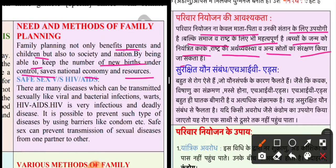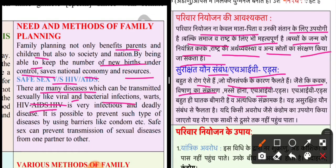Safe sex and HIV/AIDS — surakshit youn sambandh aur HIV AIDS. There are many diseases which can be transmitted sexually, like viral and bacterial infections, warts, and HIV/AIDS. Bahut se aise rog hai jo ki youn sambandh ke karan failte hai, jaise ki kavak, vishanu ka sankraman, masse hona, HIV AIDS. HIV is a very infectious and deadly disease. It is possible to prevent such diseases by using barriers like condom. Safe sex can prevent transmission of sexual diseases from one partner to another. HIV AIDS bahut ghatak bimari hai aur ye atyadhik sankramak bhi hai — ye assurakshit youn sambandh se pailta hai.